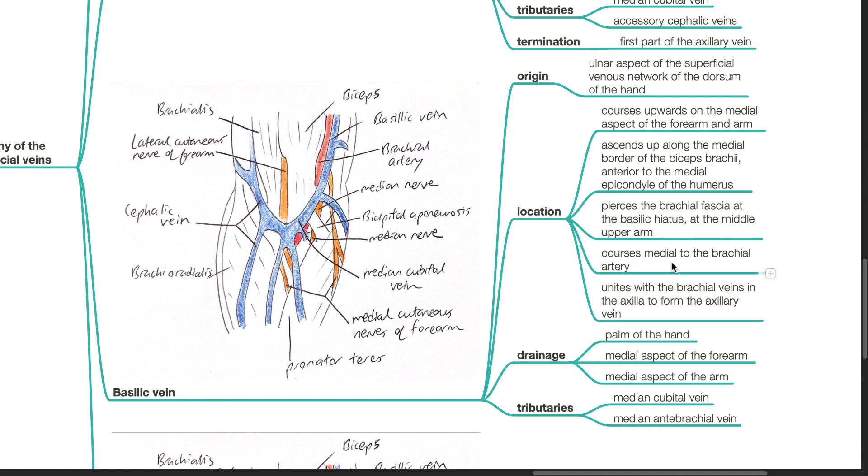It courses medial to the brachial artery and unites with the brachial veins in the axilla to form the axillary vein. It drains the palm of the hand, medial aspect of the forearm and medial aspect of the arm. Tributaries include the median cubital vein and the median antebrachial vein.